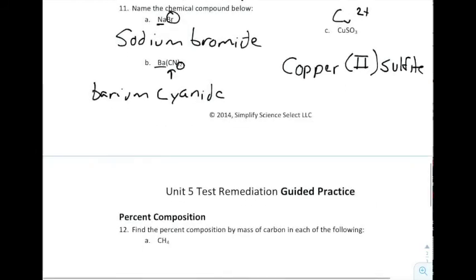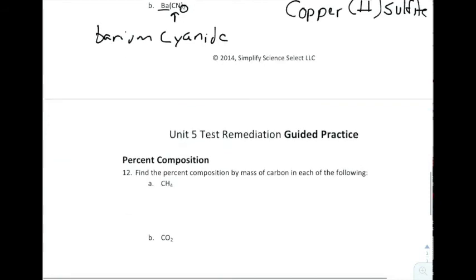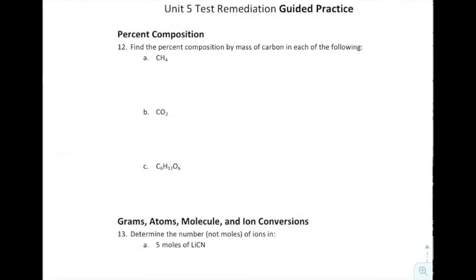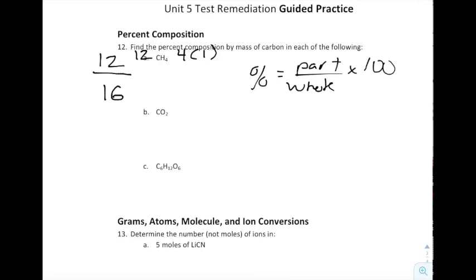Next, we need to calculate percent composition. The first one says find the percent composition by mass of carbon in each of the following. Remember, any time you do percent, percent is just part over whole times 100. I'm looking for the percent mass of carbon. I look at the whole mass of this thing, and I would go to the periodic table just like we've done for molar mass before, and I would say that the entire mass of CH4 is 16. The reason for that is I have one carbon, which has a mass of 12, and I have four hydrogens, all of which have a mass of one. When I add those up, I get 16. Then I would take the mass of carbon and divide it by the mass of the total. And when I do that, I end up getting three quarters or 75% whenever you put it into percent composition.